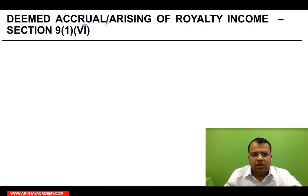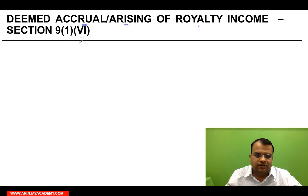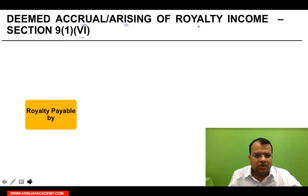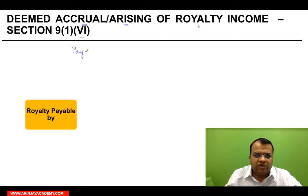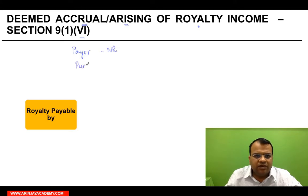Let us look at the deemed accrual and arising of royalty income. The provisions are given in Section 9(1)(vi). Just like in the case of interest, even royalty income — whether it is deemed to accrue or arise in India — is governed by two key factors: who is the person paying the royalty to the non-resident, and what is the purpose for which such royalty income has been paid to the non-resident.